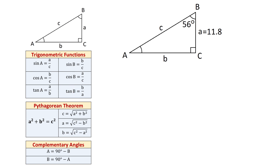In any of these functions we have three variables — one angle and two sides. So if we are given two of these variables, then we can solve for the unknown variable.